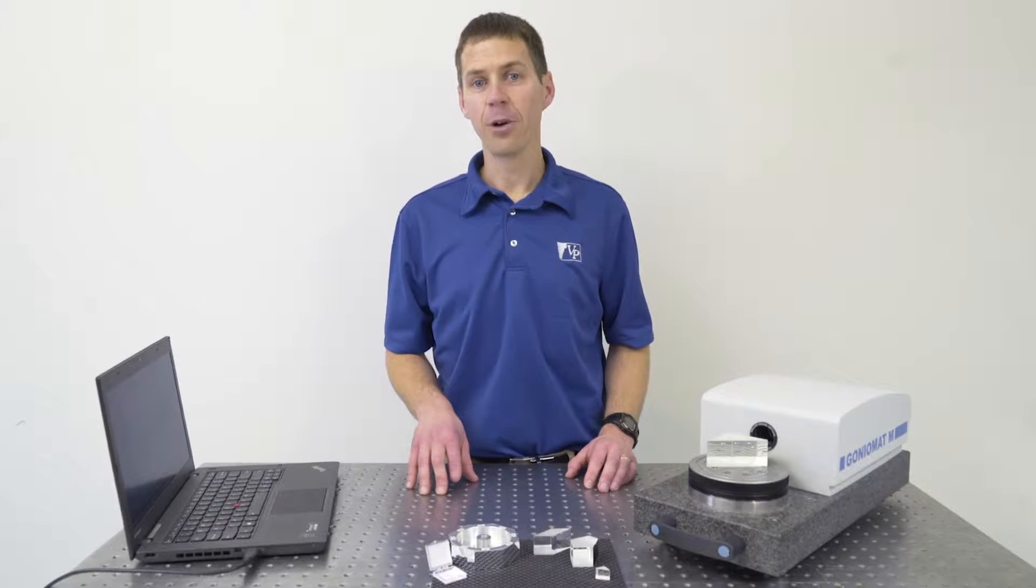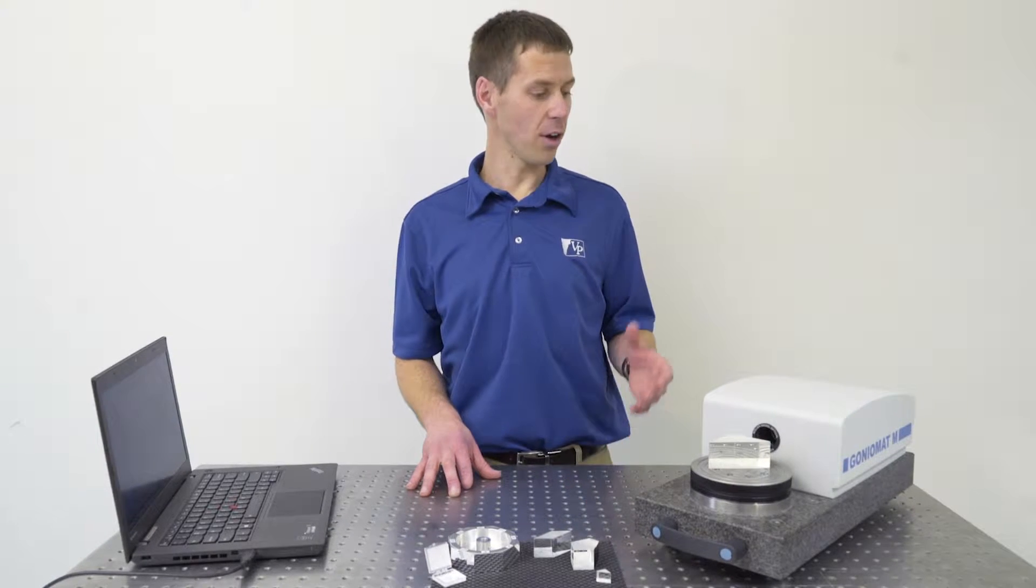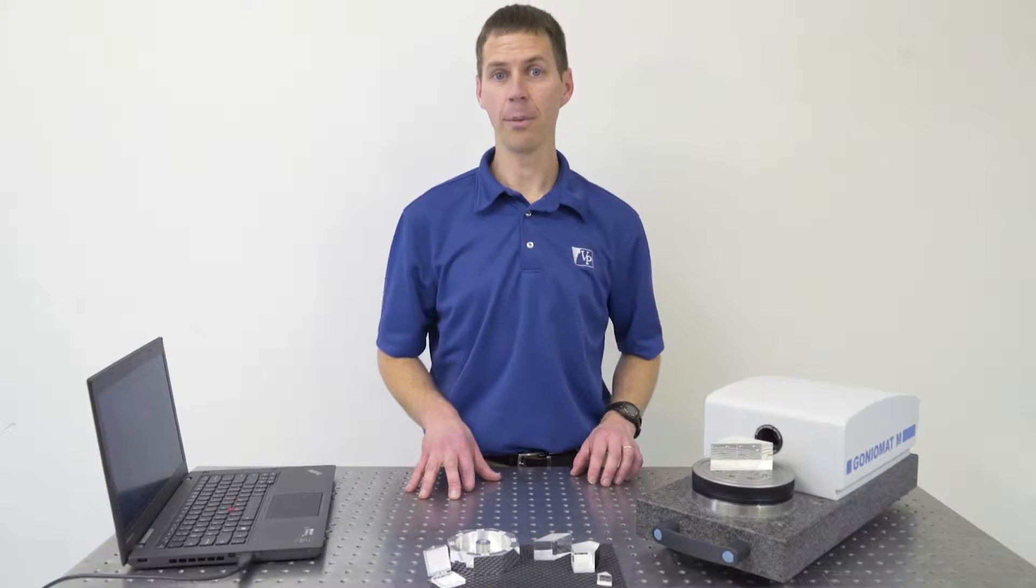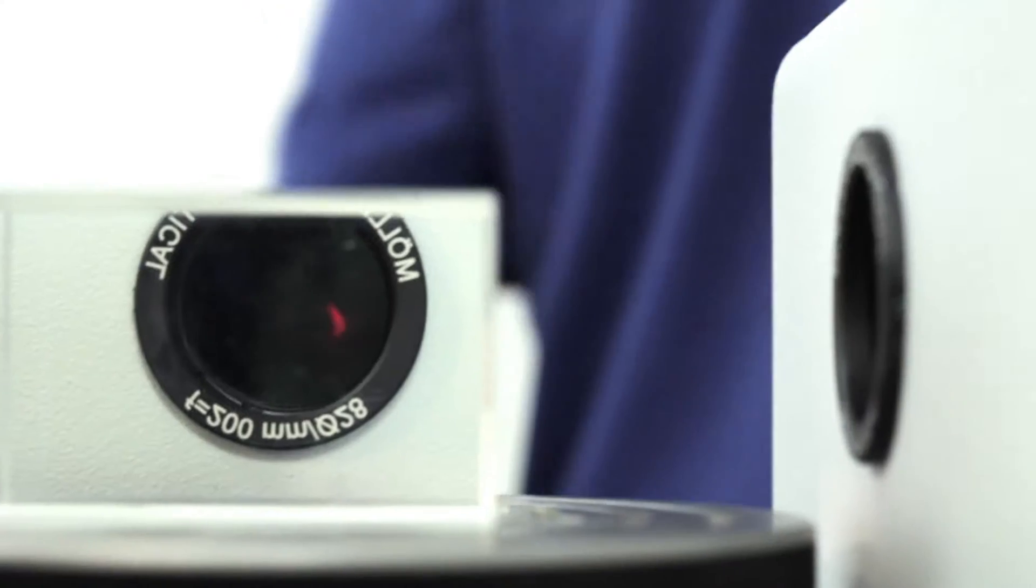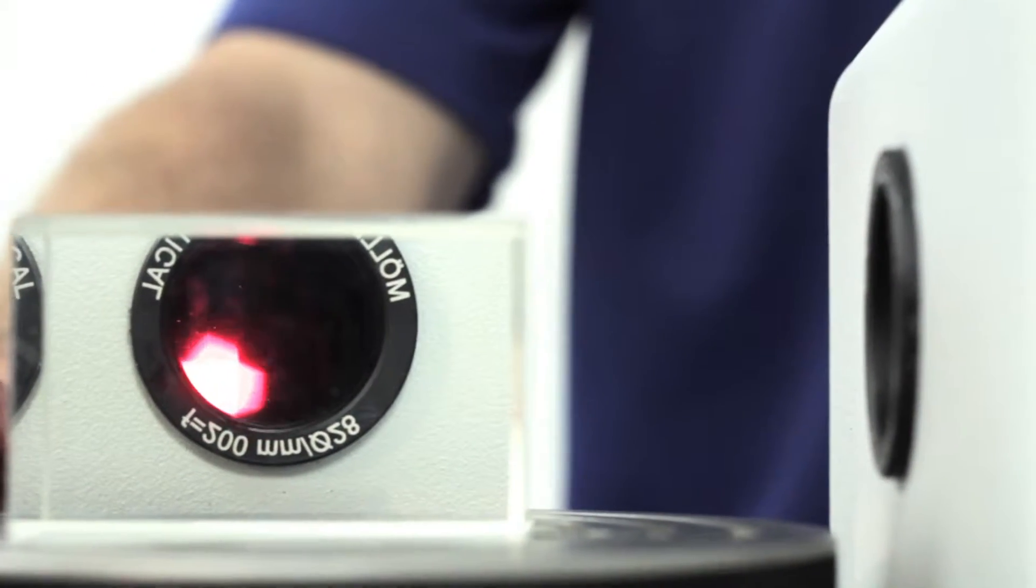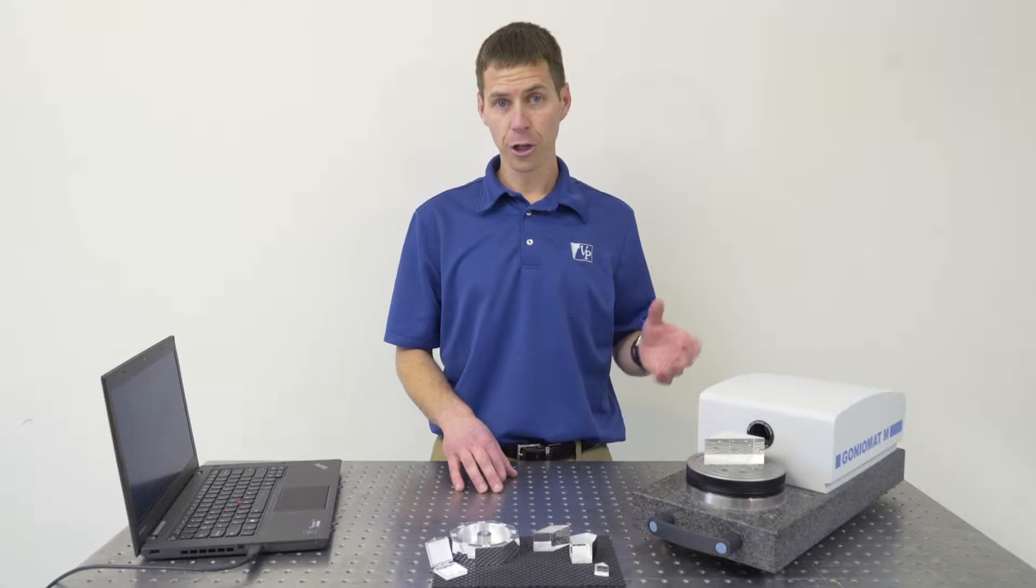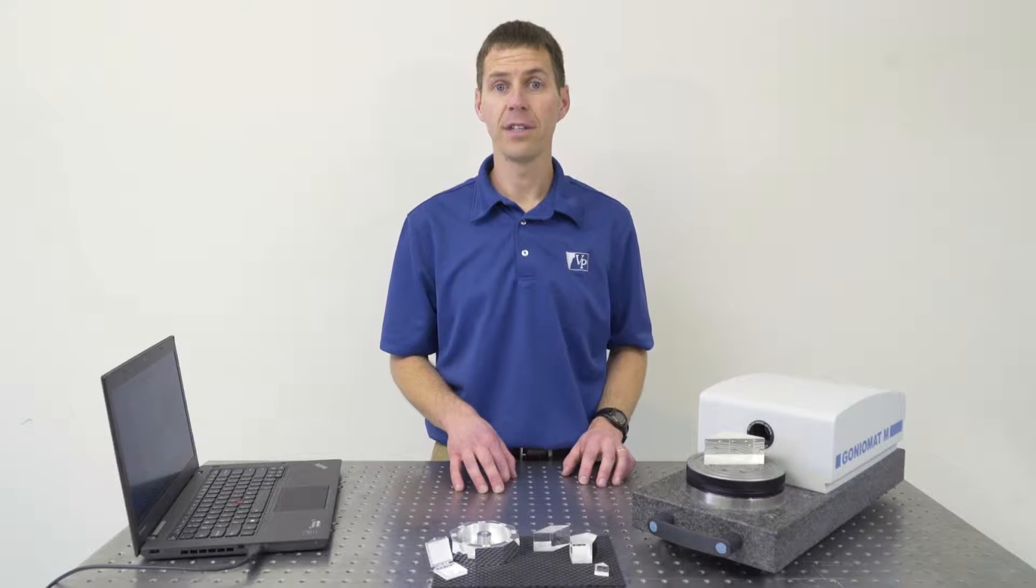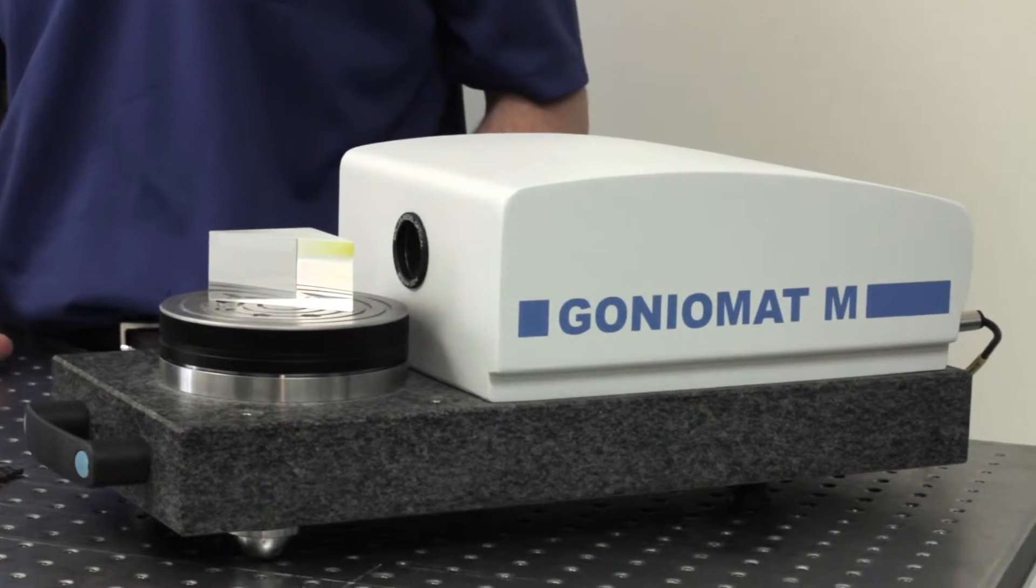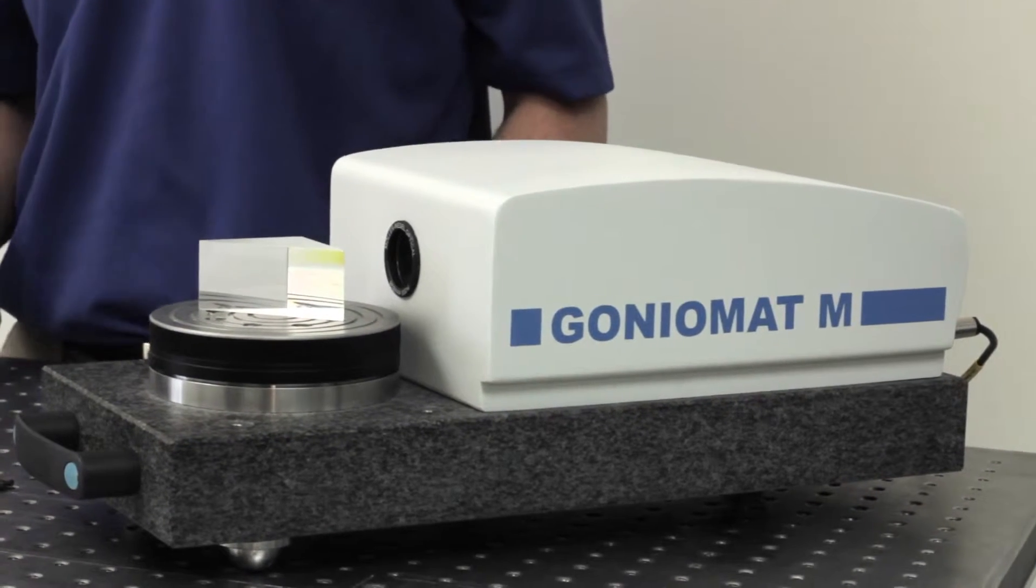Hi, I'm Christian Girton, and I want to introduce our line of automatic and semi-automatic goniometers for measuring optical components and optical systems. These are manufactured by Muller Vittel Optical in Germany, and they've used their 150 years of experience in producing high-quality optics to create the GoniMAT line.